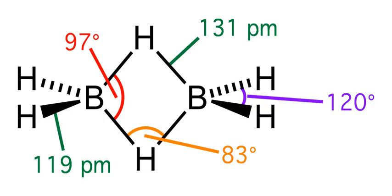Diborane 6, generally known as diborane, is the chemical compound consisting of boron and hydrogen with the formula B2H6.